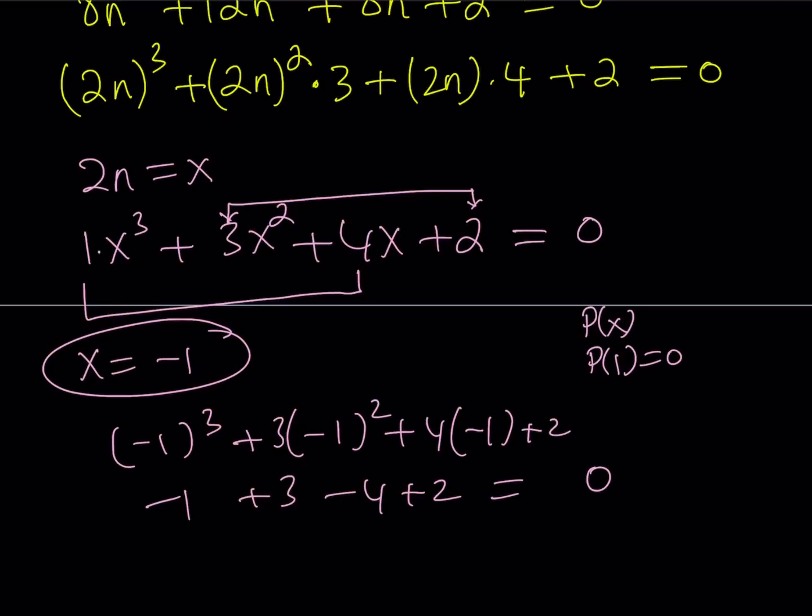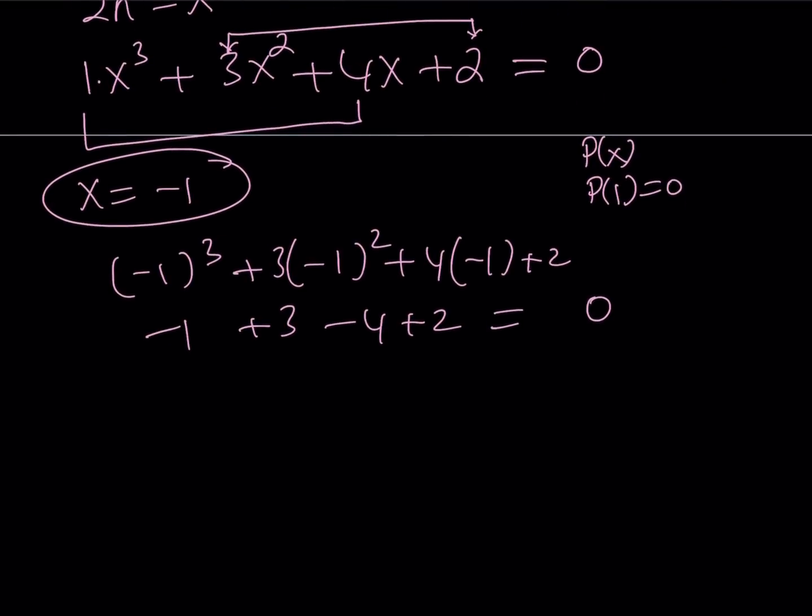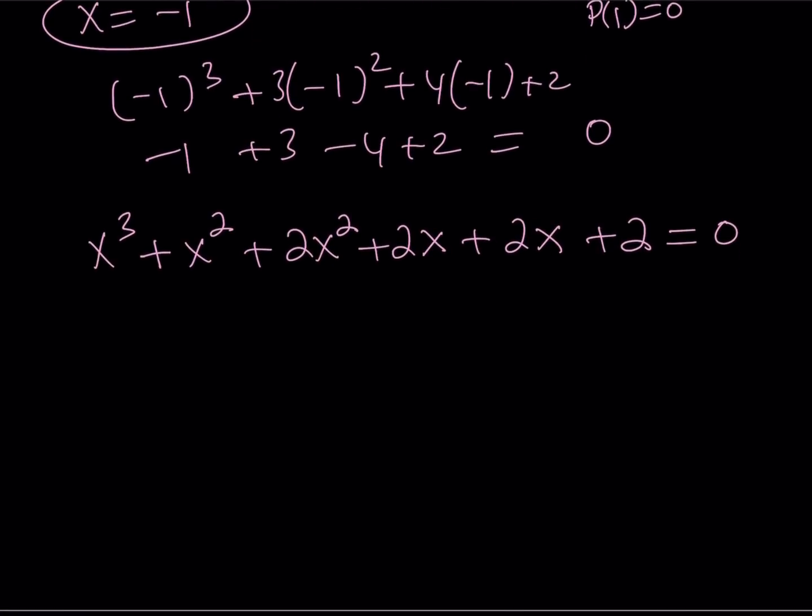So x = -1 is a solution of this equation, which is really nice because we can reduce the power. Let's arrange these terms to reflect that. I can add x² here. This is divisible by x + 1, which means x + 1 is a factor.